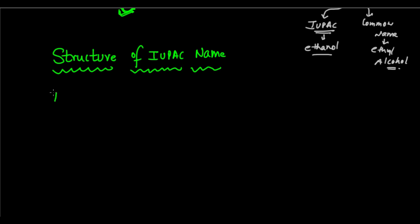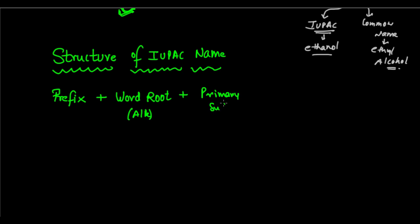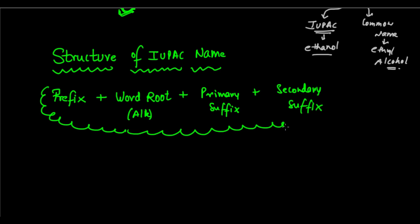First comes the prefix. After the prefix comes the word root, which is also called 'alk'. Then comes the primary suffix, and then comes the secondary suffix. So these are the basic components of an IUPAC name structure: first the prefix, then the word root, then the primary suffix, and finally the secondary suffix.